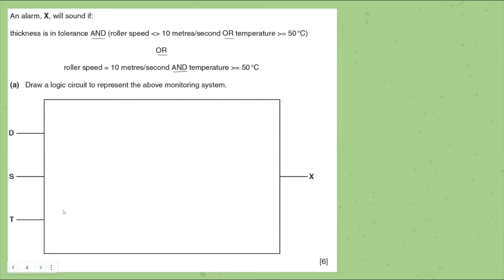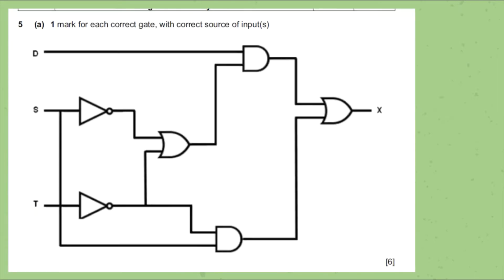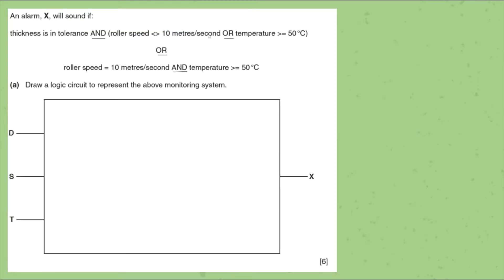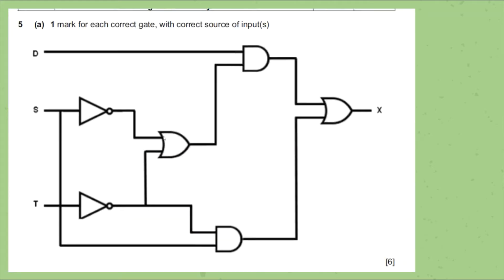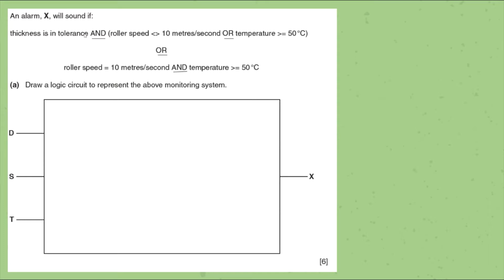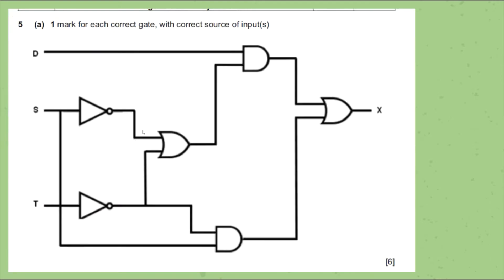After identifying the NOT gates, we draw the logic circuit. S is connected to a NOT gate so that 1s are converted to 0s. T is also connected to a NOT gate for the same reason. Between these two NOT gate outputs we place an OR gate. Thickness D (which is 1) requires no NOT gate. Then we fix an AND gate between D and the OR gate output.